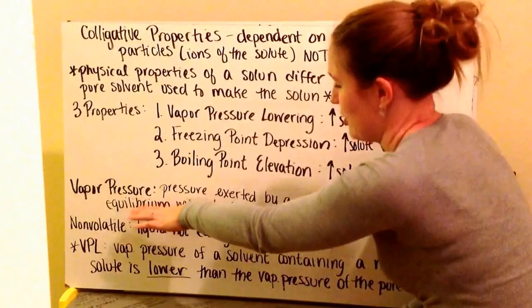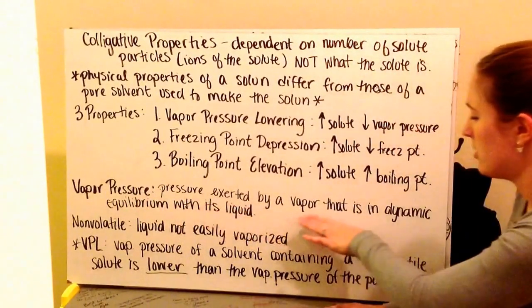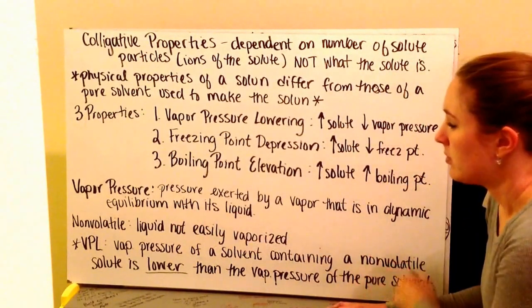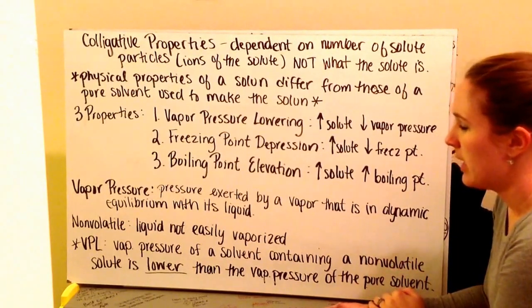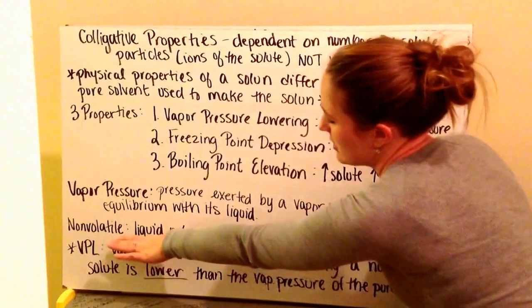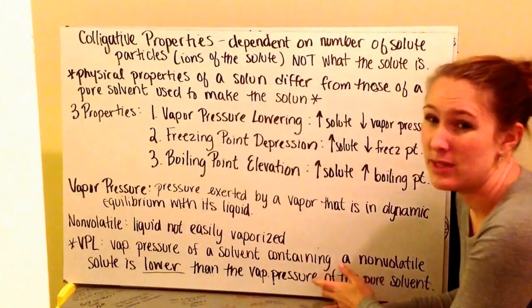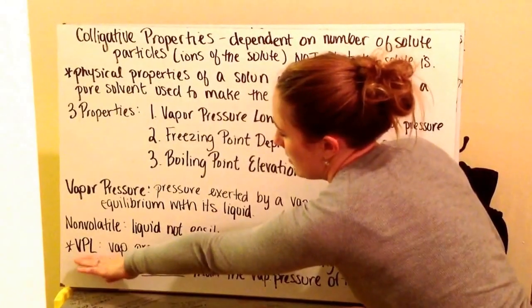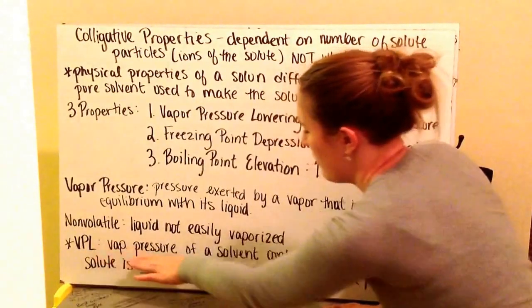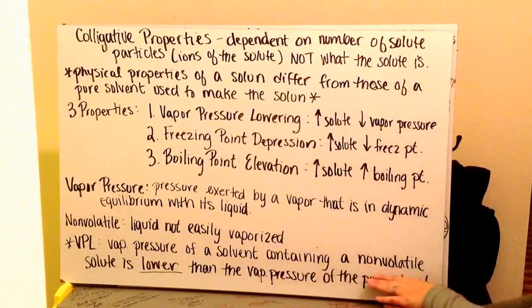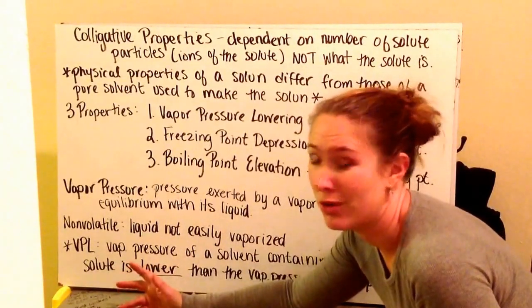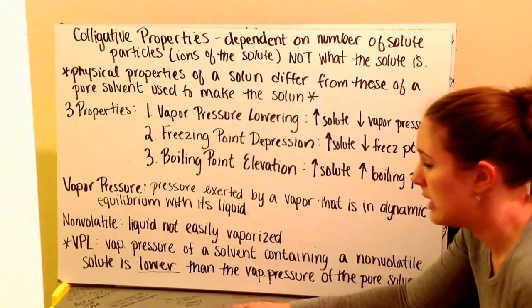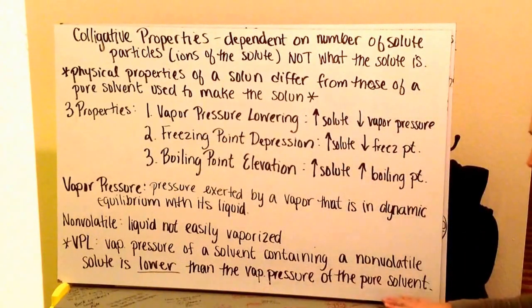Vapor pressure is the pressure exerted by a vapor that is in dynamic equilibrium with its liquid — it's equally able to be in the vapor form. Non-volatile substances are liquids that are not easily going to go into the gaseous phase; they want to stay as a liquid. VPL, or vapor pressure lowering, is the vapor pressure of a solvent containing a non-volatile solute, which means the solute won't go into the gas phase quickly. It's going to be lower than the vapor pressure of the pure solvent.